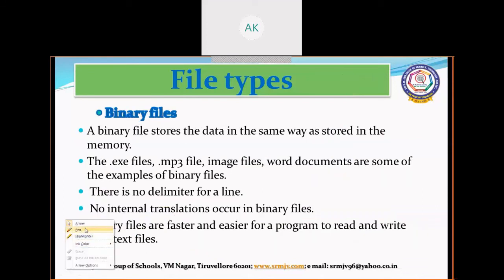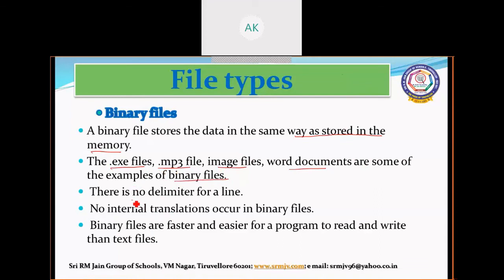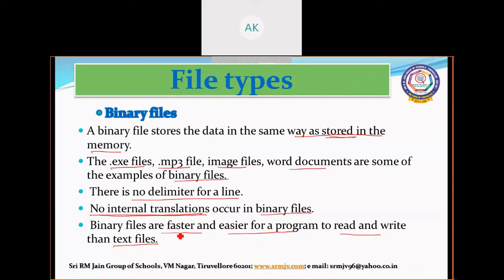The second type is the binary file. A binary file stores data in the same way as it is stored in memory, so it does not need any internal translation. EXE files, MP3 files, image files, and Word documents are some examples of binary files. There is no delimiter because the contents are stored in the form of memory. Binary files are faster and easier for programs to read and write than text files, because there are no internal translations needed.